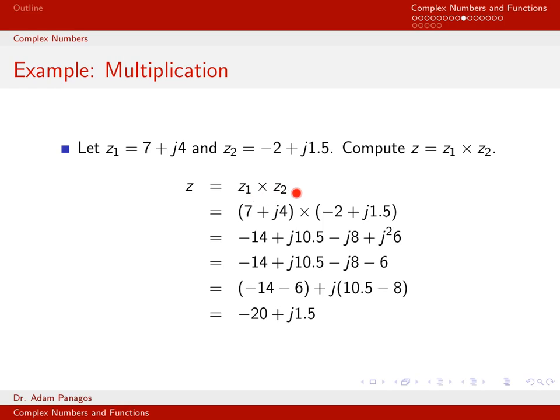Taking the first: 7 times negative 2 is negative 14. Then the outer: 7 times 1.5 is 10.5, but there's a j there, so I carry along the j. Then the inner: j4 times negative 2 is negative j8. And finally, the last: j4 times j1.5 — there are two j's, so I end up with j squared, and 4 times 1.5 is 6, giving me 6j squared.